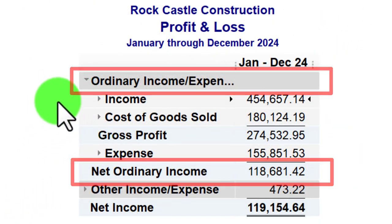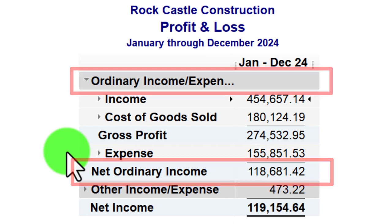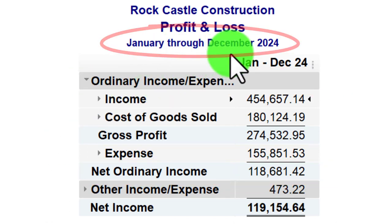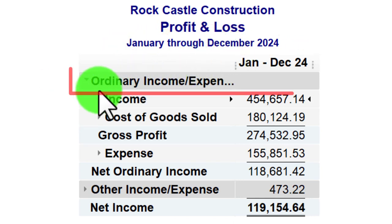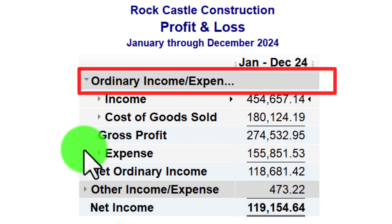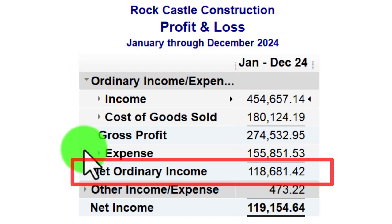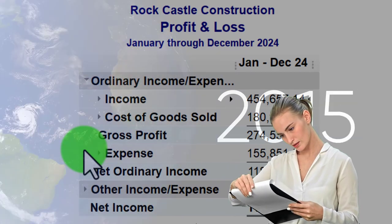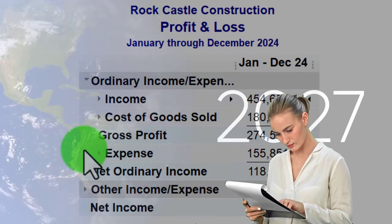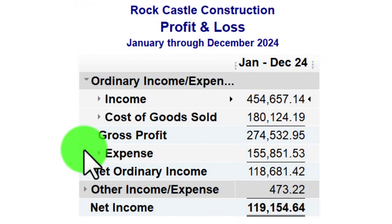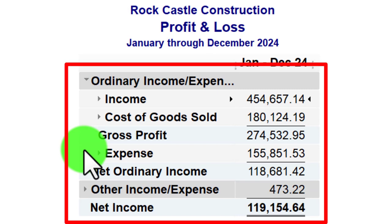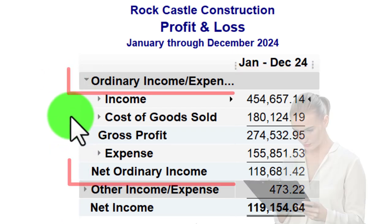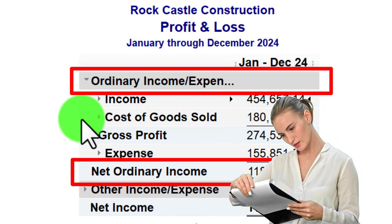These two things should be linked from an accrual standpoint — we want to link them in the same time frame. The income we generated within the year we'd like to link to what we had to expend within the same period to generate that revenue. That lets us look at performance and compare it to another year, or compare it to other companies. Then we add a little more complexity with what we'd call a multi-step income statement as opposed to a single-step income statement.